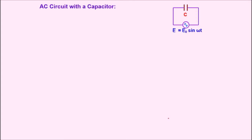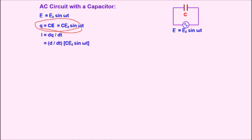Now for the AC circuit with a pure capacitor: a capacitor is connected across an alternating current source E equals E naught sin omega t. We know that charge q equals CE, so q equals C times E naught sin omega t. To get the equation of current, we differentiate with respect to time: I equals dQ/dt equals d/dt of C E naught sin omega t. On differentiating we get I equal to E naught divided by (1/omega C) times cos omega t, which converts to I equals I naught sin(omega t plus pi/2).